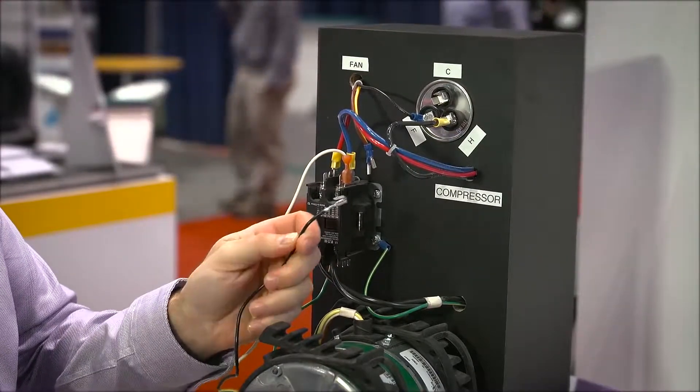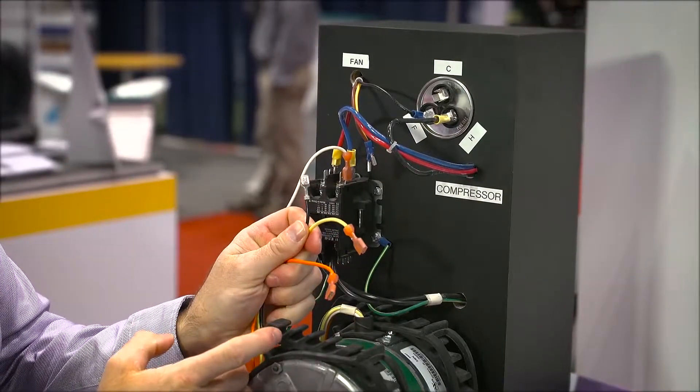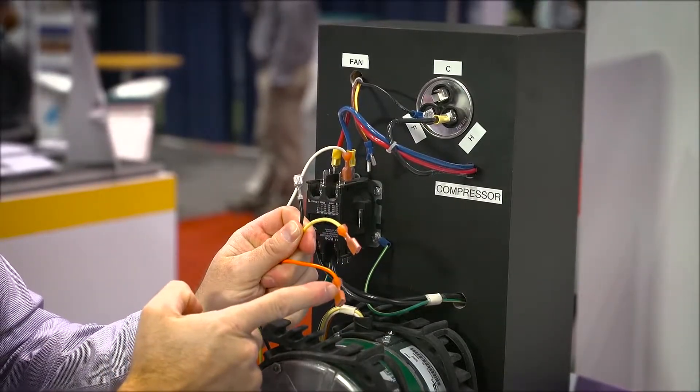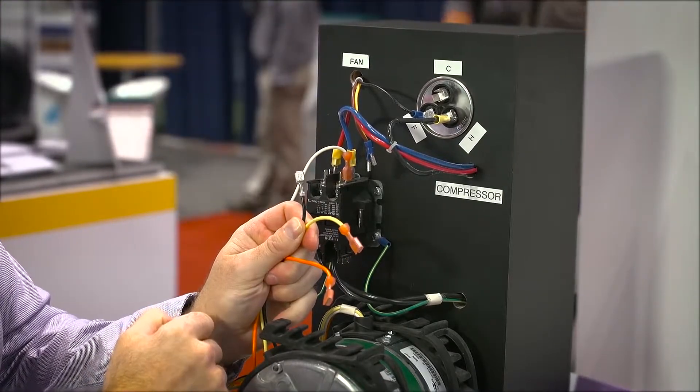But before we connect the black wire we want to find the orange and yellow wires to determine whether we're replacing an 8-pole, 825 rpm rated motor or a 6-pole, 1075 rpm rated motor.